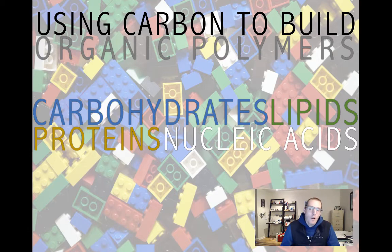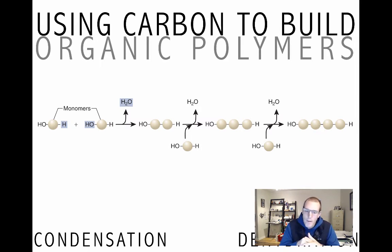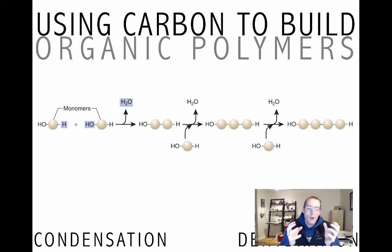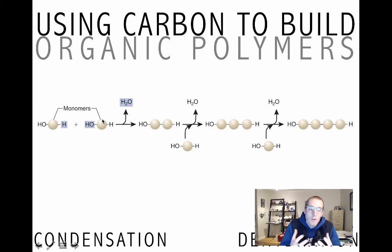What we're going to look at now is how you actually build those organic polymers. The chemistry we use — and we're not too interested in the actual reaction mechanism — comes under two names: condensation chemistry, or dehydration chemistry. Those two words mean chemically slightly different things, but we won't worry about that. So whether you say condensation or dehydration, that's fine. We're going to take two monomers — when building a protein from amino acids, these monomers could each be a different amino acid. If we were building glycogen, the storage carbohydrate in your muscles and liver, each monomer would be glucose. This is a very general way of looking at this process.